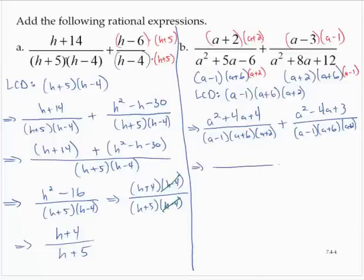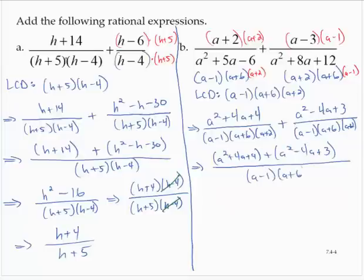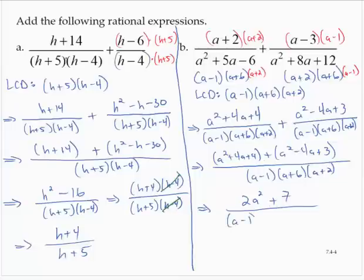Adding the fractions to make a single fraction, I have (a² + 4a + 4) + (a² − 4a + 3) over the common denominator (a − 1)(a + 6)(a + 2). Combining like terms: 2a² plus 4a minus 4a gives 0, and 4 + 3 = 7. So the result is (2a² + 7) / ((a − 1)(a + 6)(a + 2)). The numerator cannot factor, so we stop there.